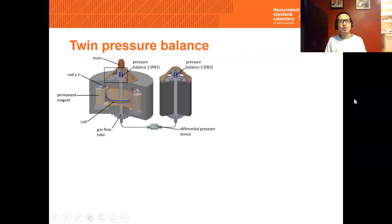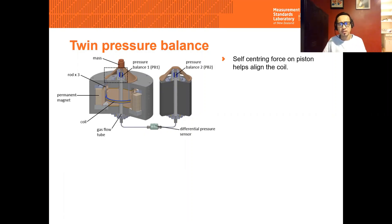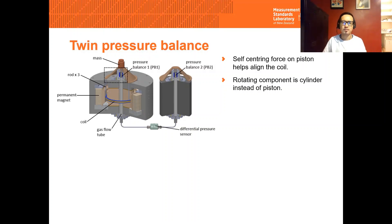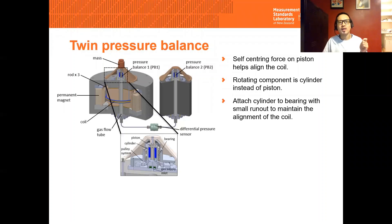One of the reasons we use a twin pressure balance design is to simplify the alignment for our Kibble Balance. This relies on the self-centering force on the piston to help align the coil with the magnetic field, remembering that the coil is attached to the piston. For most conventional pressure balances, the piston is the rotating component. However, in our Kibble Balance, we cannot rotate the piston because the coil and other components are attached to it — if it rotates, it will fall apart. So we have to rotate the cylinder instead. We are assembling a setup where the cylinder is attached to a smooth bearing with small vertical and angular runout to ensure the alignment of the coil. The cylinder has to rotate at least 0.5 Hz for the self-centering force to take effect.